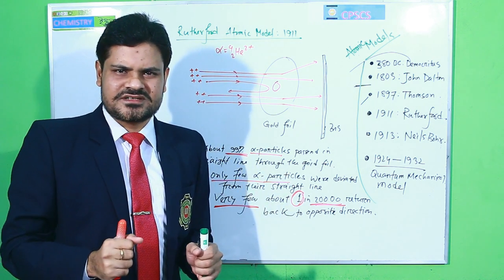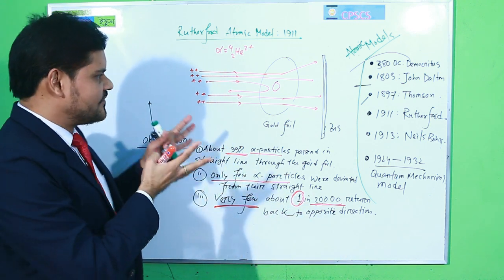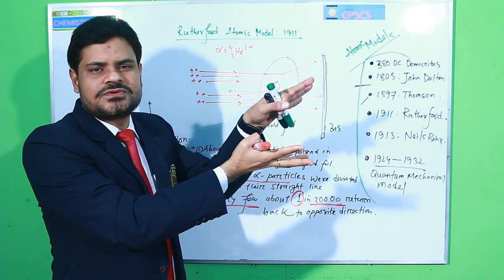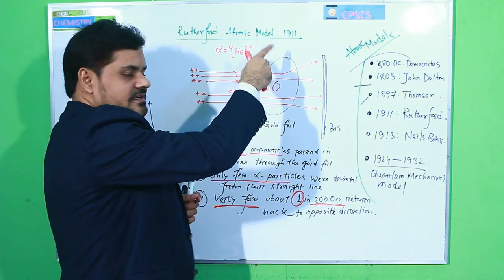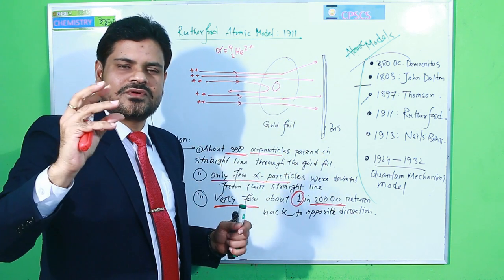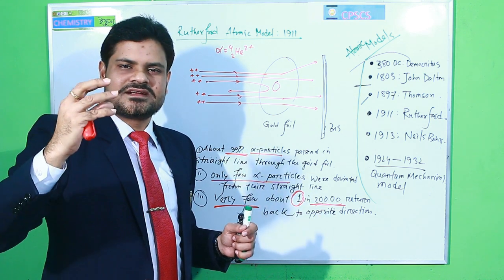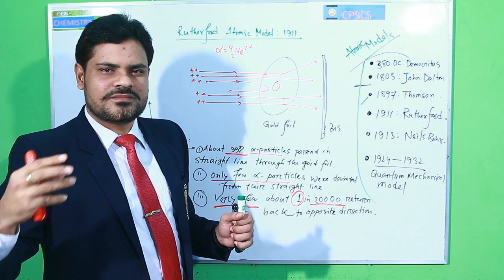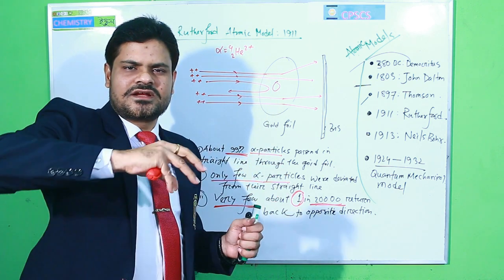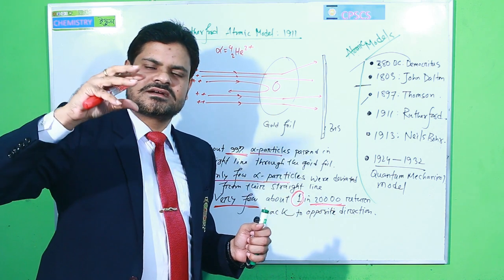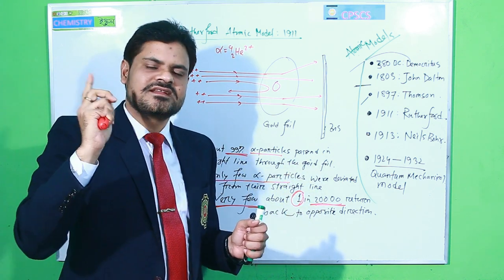From these observations, Rutherford concluded: since most alpha particles passed through the gold foil in a straight line, the major inner part of the atom is empty. In those empty places electrons may exist, but electrons cannot deflect alpha particles because alpha particles have high speed and greater mass than electrons. So the inner part of the atom is mostly empty.